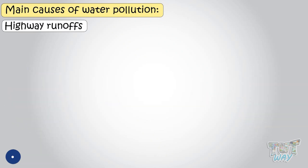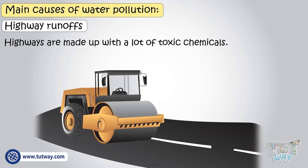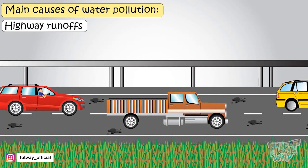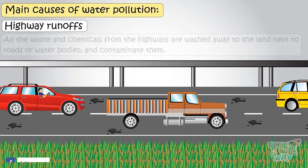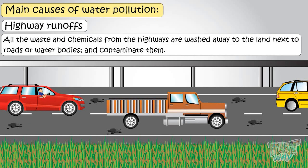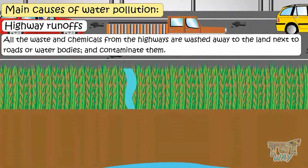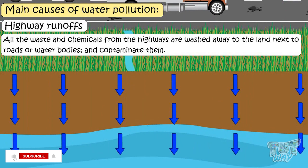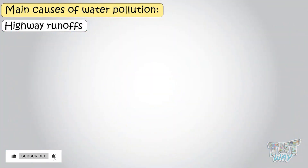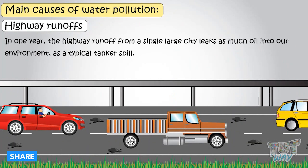Highway runoffs are another cause. Highways are made with a lot of toxic chemicals, and there is spilled fuel, brake fluids, and other wastes and dust from the tires. All the waste and chemicals from the highway are washed away to the land next to roads or water bodies and contaminate them. It has been estimated that in one year, the highway runoff from a single large city leaks as much oil into our environment as a typical tanker spill.